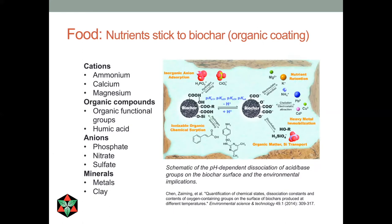How does biochar hold on to nutrients? It's amazingly competent at holding a variety of nutrients — cations like ammonium, calcium, and magnesium, but also anions like phosphate, nitrate, and sulfate, as well as organic compounds and minerals. The mechanisms include electrostatic attraction and hydrogen bonding. There's a lot of complex chemistry involved, but different kinds of bonds allow biochar to hold on to these nutrients.